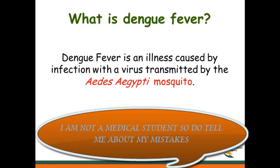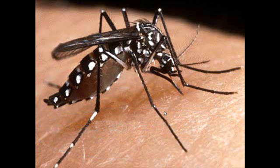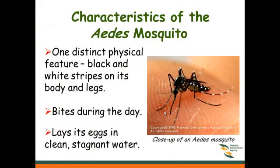The virus is transmitted by the Aedes aegypti mosquito. This is the mosquito — you can see it sucking blood from the skin. The characteristics of the Aedes mosquito include distinct physical features: black and white stripes on its body and legs.